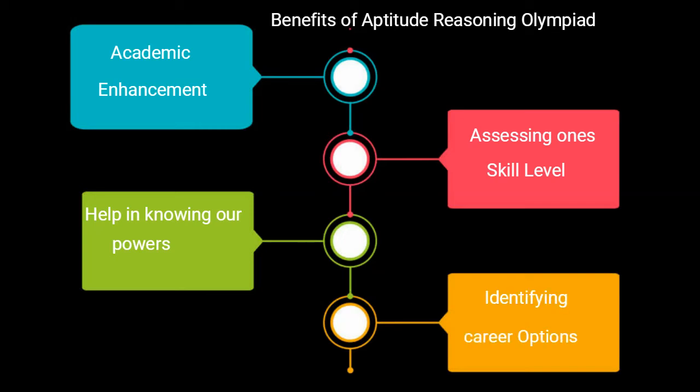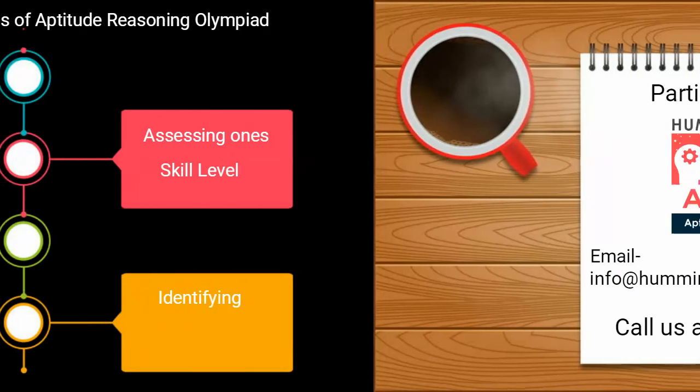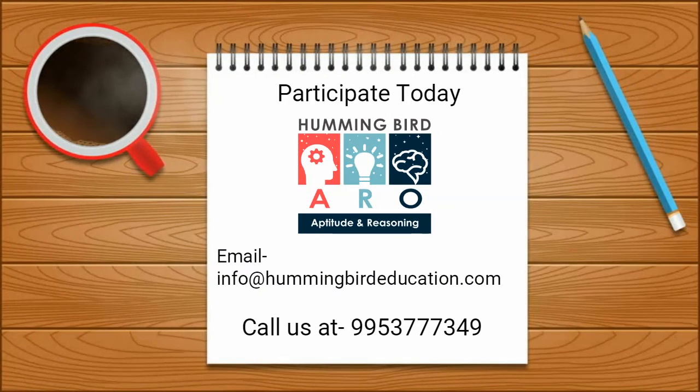4. Identifying career options. Participate today. For further information, email info@hummingbirdeducation.com or call us at 995-377-7349. Thank you.